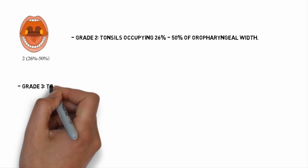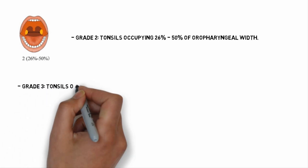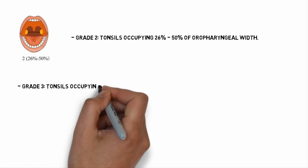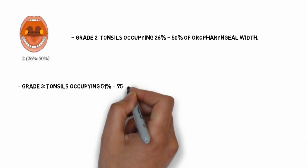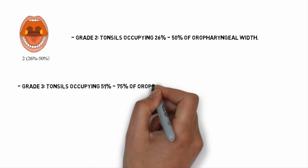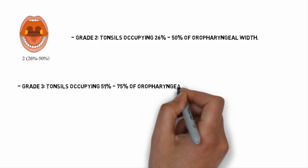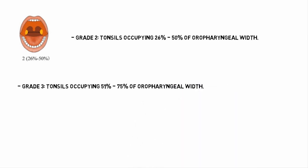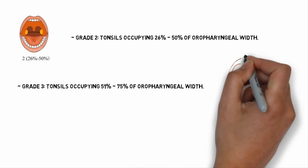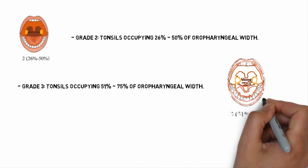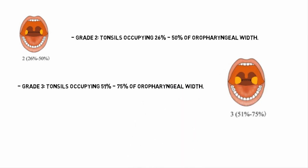Coming to grade 3, tonsils occupy 51 to 75% of oropharyngeal width, which can lead to symptoms such as snoring or dysphagia.